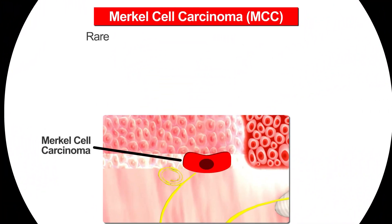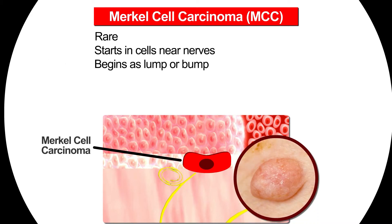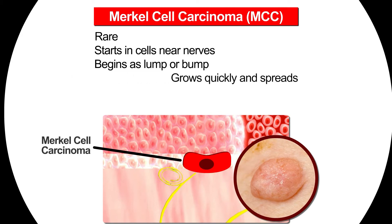Merkel cell carcinoma is a rare type of skin cancer. It begins in the Merkel cells close to nerve endings. This type of cancer often appears as a pink, red, or purple lump or bump on the skin, and these can be anywhere on the body. It tends to grow quickly and spread, first to nearby lymph nodes and then to other parts of the body. It is rarely found early and can be hard to treat.